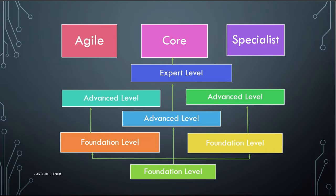Once you have the foundation level, you can go for the advanced level. The advanced level under Agile is the Agile Technical Tester certification. Under Core it is the Test Manager, Test Analyst, or Technical Test Analyst. Under the Specialist category, the advanced level gives you certification in Security Tester and Test Automation Engineer. There is one more level in Core — the Expert level — where you can get certification in Test Management and Improving the Test Process.